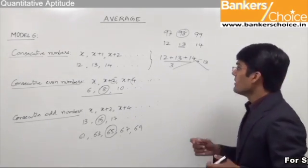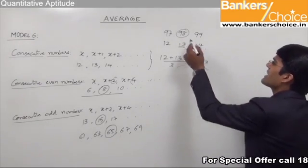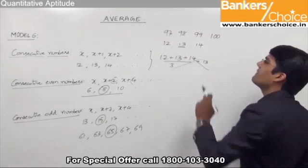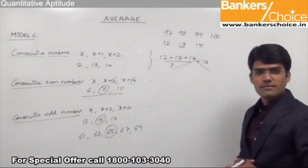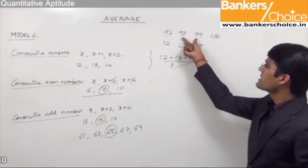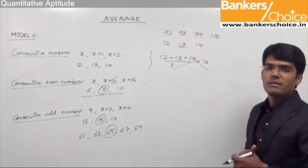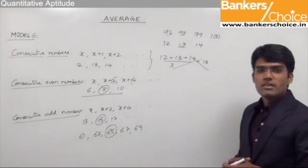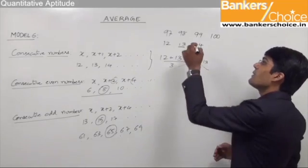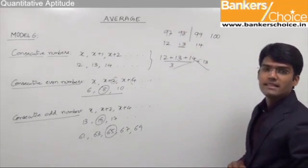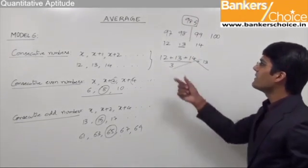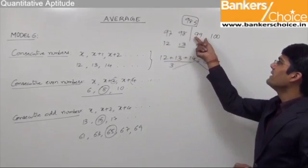Let us take an example. Let us say the four consecutive numbers are 97, 98, 99 and 100. As you can see we do not have one particular middle number. Instead we have two numbers which form the middle — that is 98 and 99. So the average for these four consecutive numbers should be taken as the number which comes exactly in between 98 and 99, that is nothing but 98.5. So 98.5 is the average for 97, 98, 99 and 100.